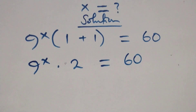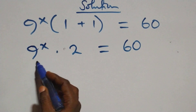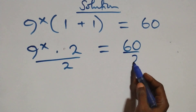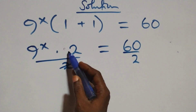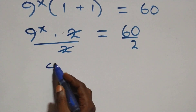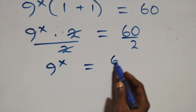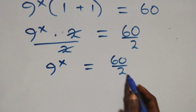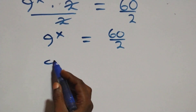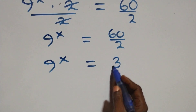From here we divide both sides by 2 — divide this side by 2 and also divide this side by 2. The twos cancel each other and we are left with 9 raised to power x equals 60 over 2, that is 9 raised to power x equals 30.